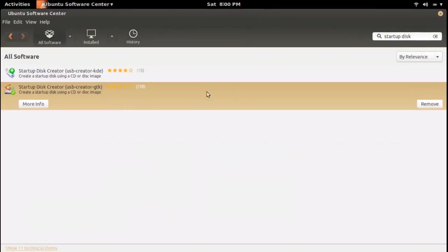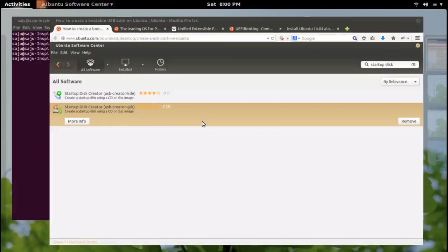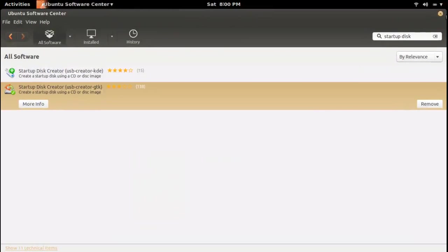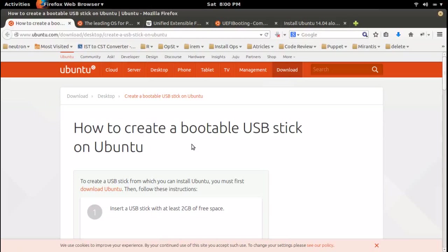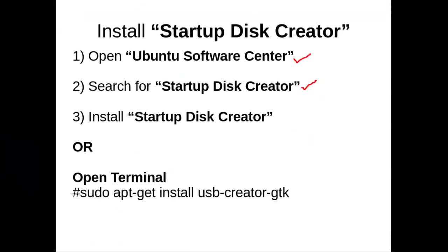OK, it's done — installation is complete. You can close it. There is one more option: you can open a terminal and execute the command 'sudo apt-get install usb-creator-gtk'. This will automatically install the USB Disk Creator.